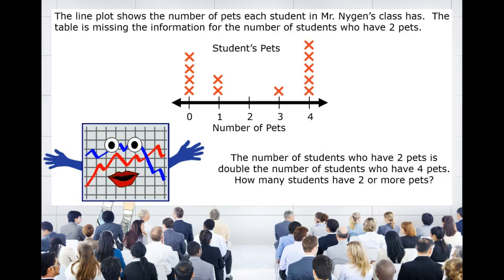Well, don't just let the fun stop. Let's try a problem involving line plots. The line plot shows the number of pets each student in Mr. Nygen's class has. The table is missing the information for the number of students who have two pets. The number of students who have two pets is double the number of students who have four pets. How many students have two or more pets? We know that since five students have four pets, the number that have two would be five times two, which equals ten. That means ten students have two pets.